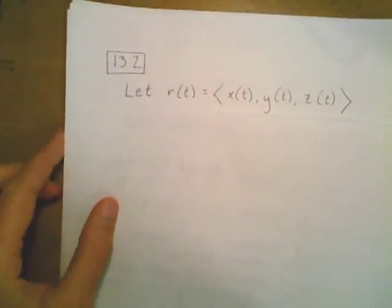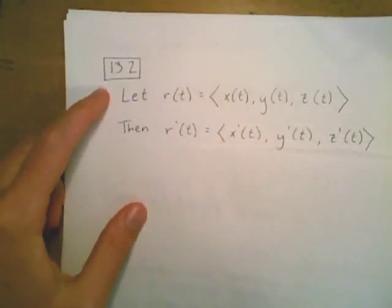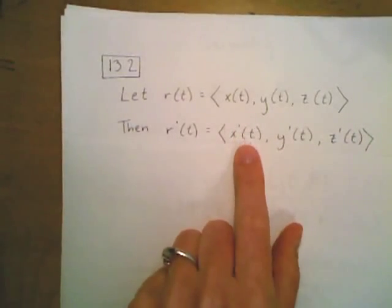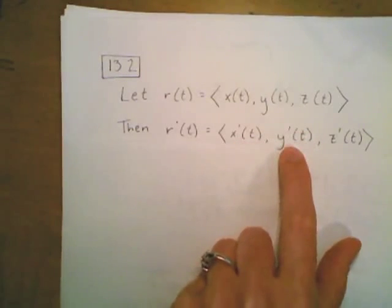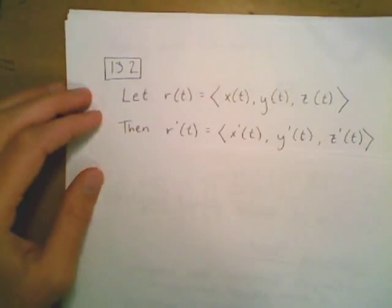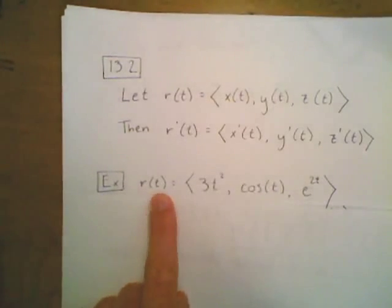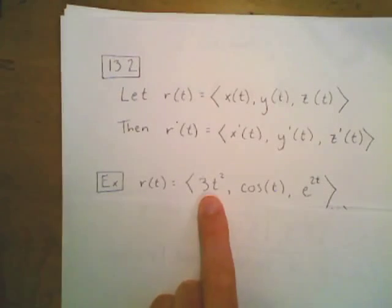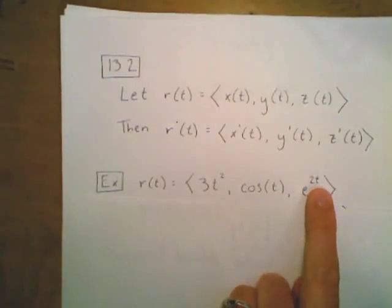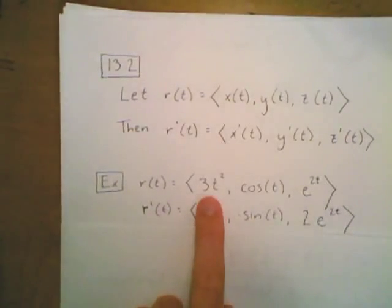Starting with section 13.2, let r of t be a vector-valued function. The derivative of r of t is the derivative of each of the component functions — the derivative of the first component in the x-coordinate, the y-component in the y-coordinate, and the z-component in the z-coordinate. For example, if we let r of t be the vector-valued function with components 3t squared, cos t, and e to the 2t, we take the derivative of each component.